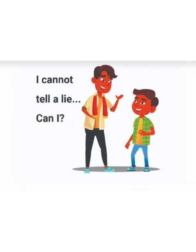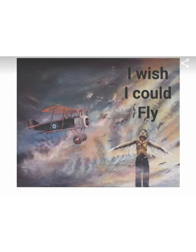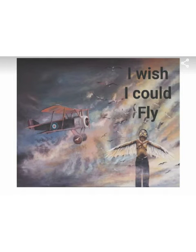For example: I cannot tell a lie. Here the modal auxiliary is cannot, or can. If a question asks you to pick out the modal auxiliary and state its function, cannot is the modal auxiliary and the function is that it is used to express ability. Another example: I wish I could fly. Here could is the modal verb — a typical form of past tense. The function is that it is used to express ability.